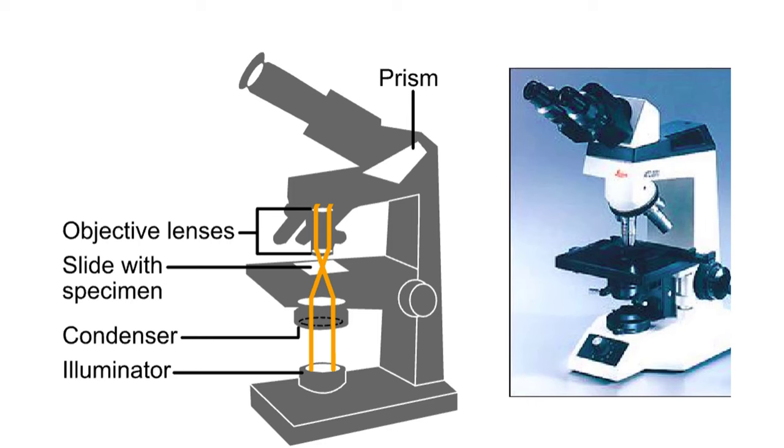A prism bends the image so that it forms in the body of the tube, where it can be more easily viewed. The ocular lens adds magnification and focuses the image on the eye.